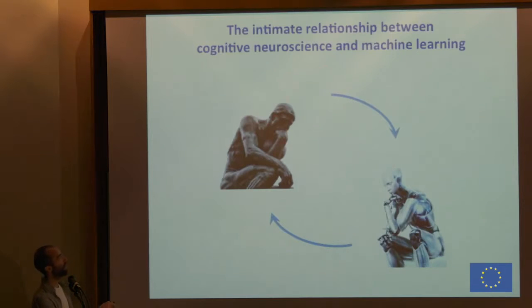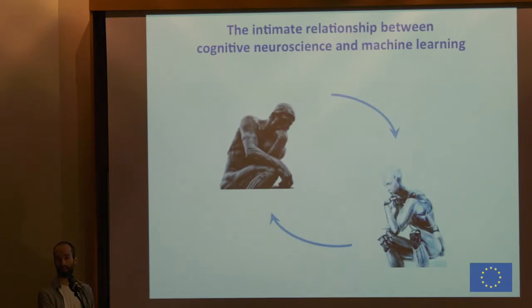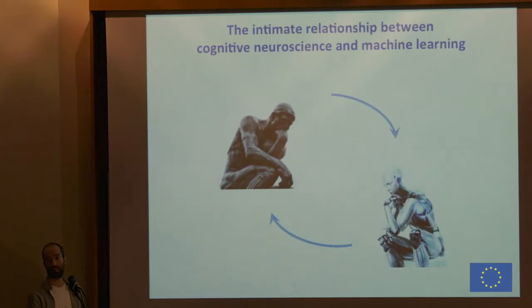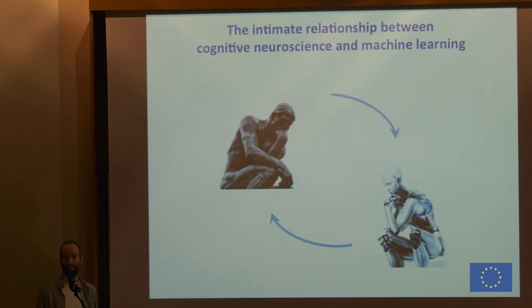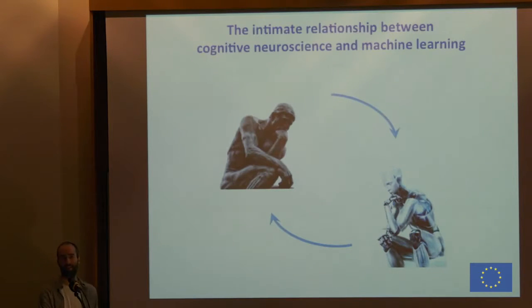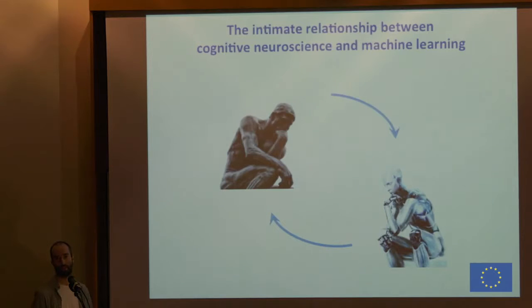There's a very fruitful and intricate relationship between cognitive neuroscience and machine learning. I think we cannot understand the human brain if we cannot build a machine which behaves like a human, and similarly, for building such a machine we should better understand our own mind and brain. This is basically why I think computer scientists, psychologists, neuroscientists, physicists, and engineers should really work all together to understand the complexities of the mind and the brain.